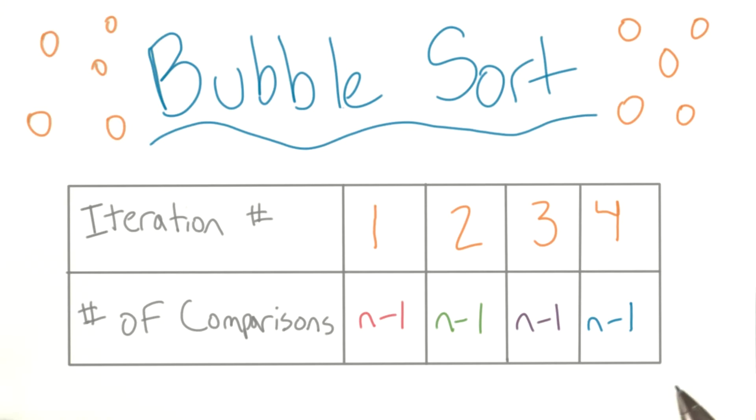Here's roughly what we did. Overall, we had to do four or n minus 1 iterations. And at each step, we did n minus 1 comparisons.